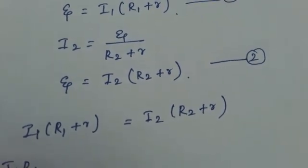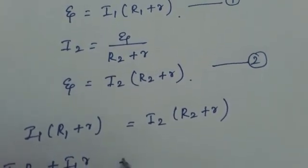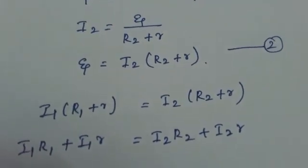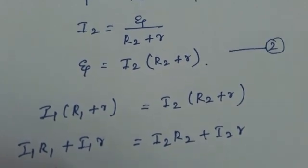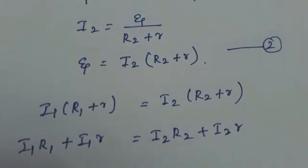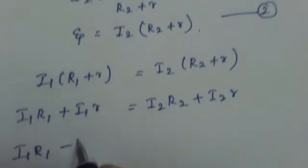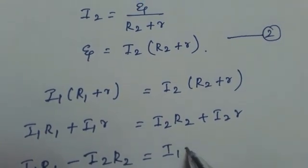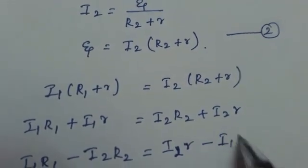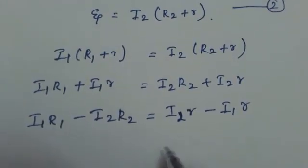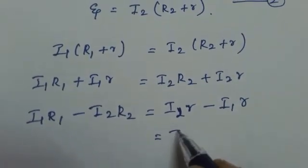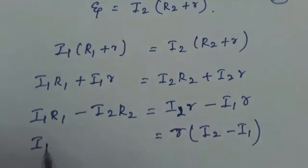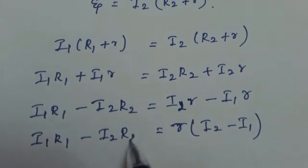Now multiply: I1 R1 plus I1 r is equal to I2 R2 plus I2 r. Now taking all the r terms to one side, so I1 R1 minus I2 R2 is equal to I2 r minus I1 r. Now this can be written as r into I2 minus I1, so this is I1 R1 minus I2 R2.